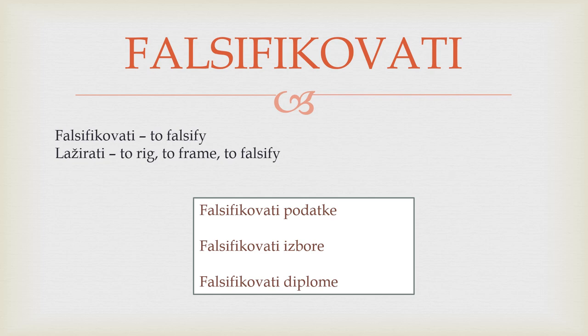The next important word is something that's illegal, and that's to falsify, to rig, to frame. We say falsifikovati, but also lažirati — that comes from laž, the word for lie. Falsifikovati or lažirati. For example, one could falsify data: falsifikovati podatke. Or you could falsify elections: falsifikovati izbore.